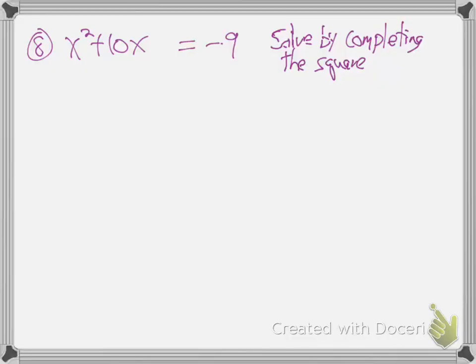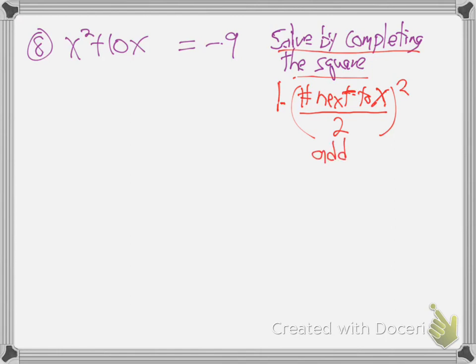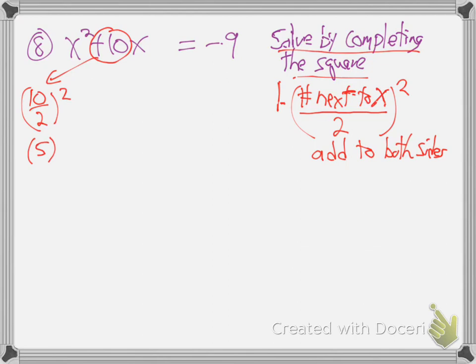Number 8: solve by completing the square. Step 1 — you take the number next to x, divide by 2, square it, and add it to both sides. That's the completing number. So for this problem, 10 divided by 2 is 5, and 5 squared is 25. Add 25 to both sides.